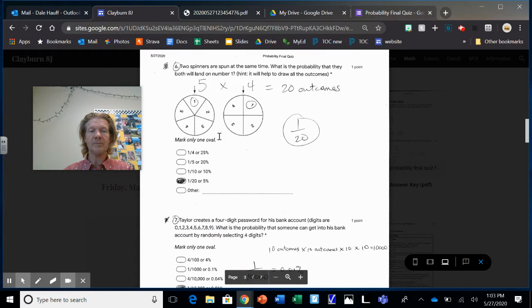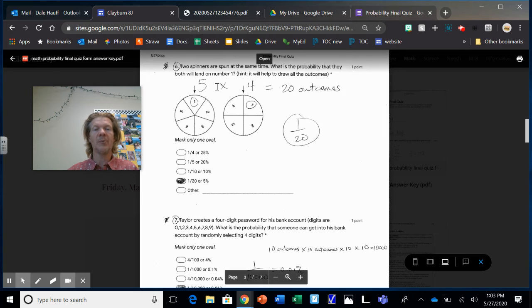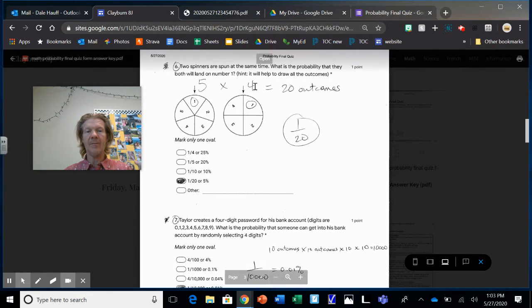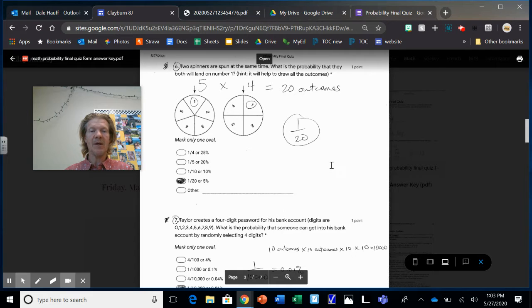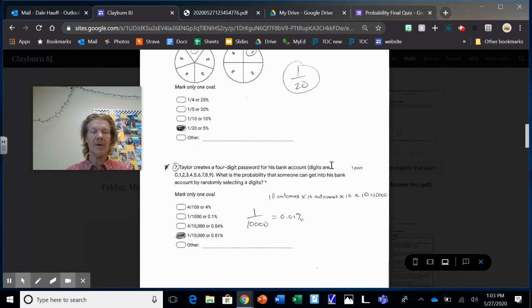This one here, two different spinners, but it doesn't really matter because they're already divided up into equal parts. They don't have to both be the same equal parts. There are five outcomes here, four outcomes here. The shortcut works super well. Otherwise you have to list 20 different outcomes. But we just multiply 20 outcomes and there's only one way to get a one and a one. So one out of 20.